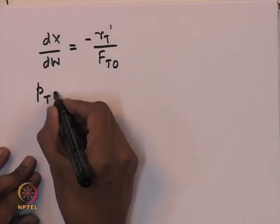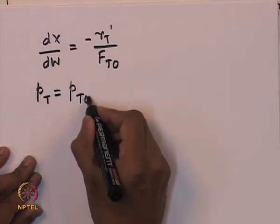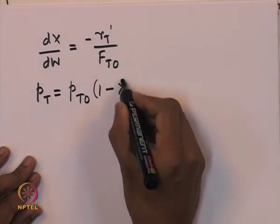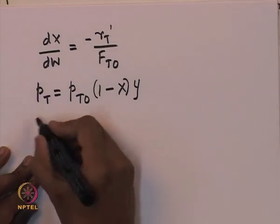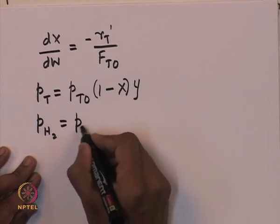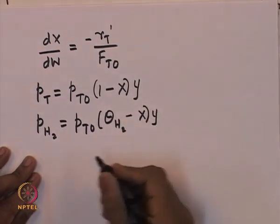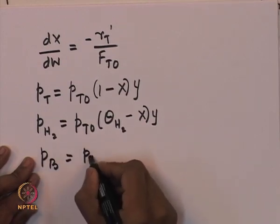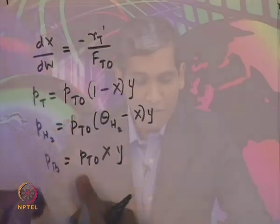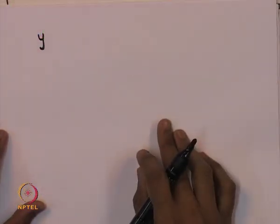We also found that the partial pressure of toluene can be expressed as P_T0 multiplied by (1 - x) into y, where y is the mole fraction. Similarly for hydrogen: P_T0 into (θ_H2 - x) into y. For benzene: P_T0 into x into y. We will continue from there today, finding the expression for y, the mole fraction, using the differential form of the Ergun equation.